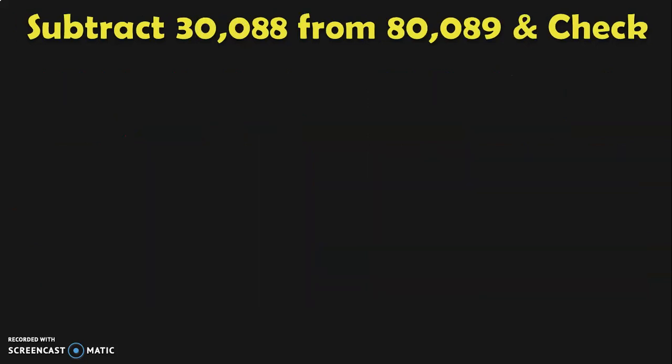Shall we do another sum now? Subtract 30,088 from 80,089 and check the answer. Note that we have more zeros in both the bigger number and the smaller number. When you have zeros in the bigger number, you move to the next location where there is a digit with a value so that you can borrow from that digit.